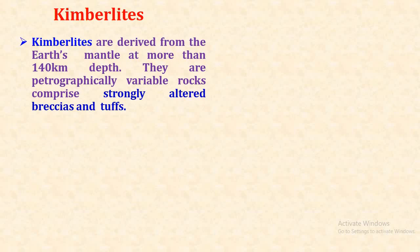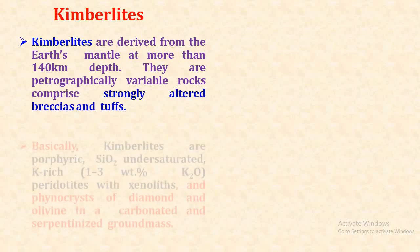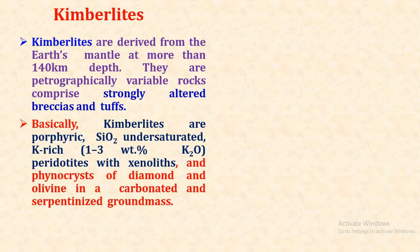Kimberlites are derived from the Earth's mantle at more than 140 km depth. They are petrographically variable rocks comprising strongly altered breccias and tuffs. Kimberlites are far-bearing, silica-undersaturated, potassium-rich, having one to three weight percentage of K2O, peridotites with xenocrysts and phenocrysts of diamond and olivine in a carbonated and serpentinized groundmass.